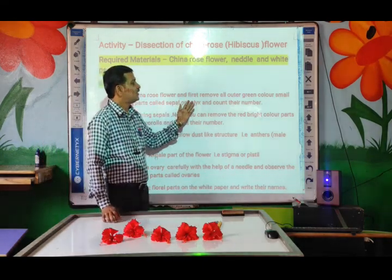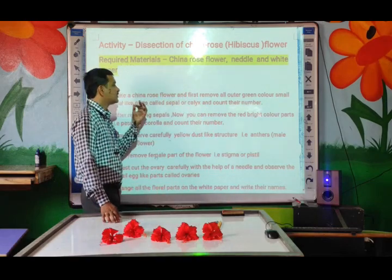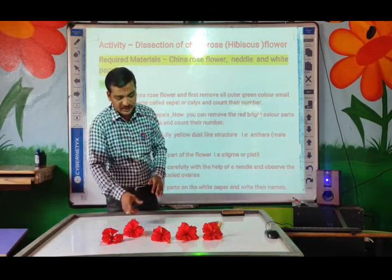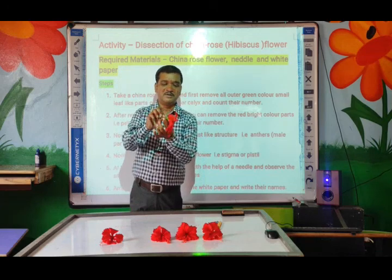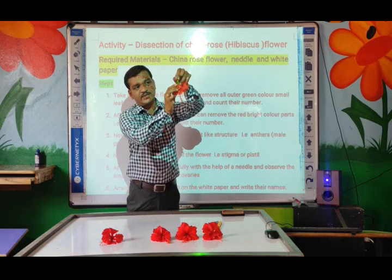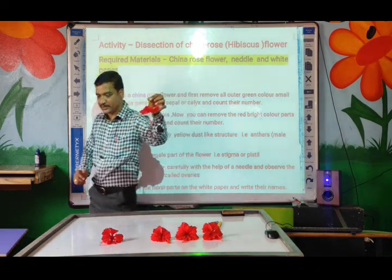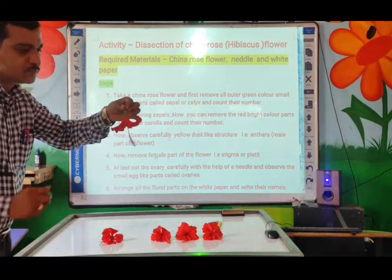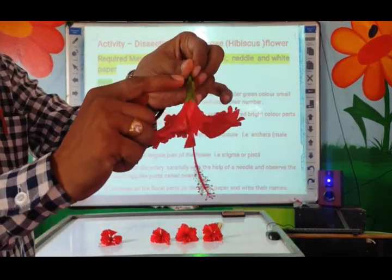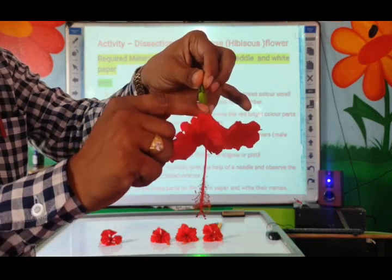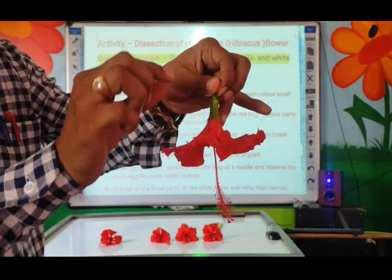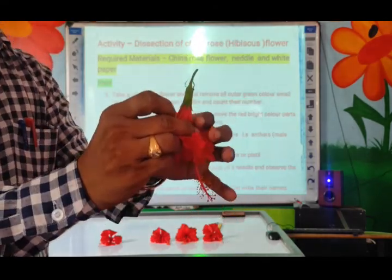Take the China Rose Flower and first remove all outer green small leaf-like structures called Calyx or Sepals. This is the flower — can you see it? You can see these green color parts. These green color leaf-like structures are called Calyx or Sepals. You have to remove them carefully because they are delicate.